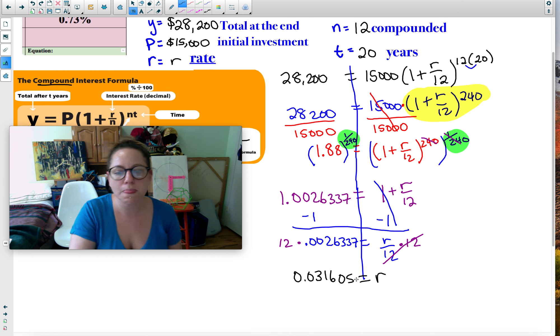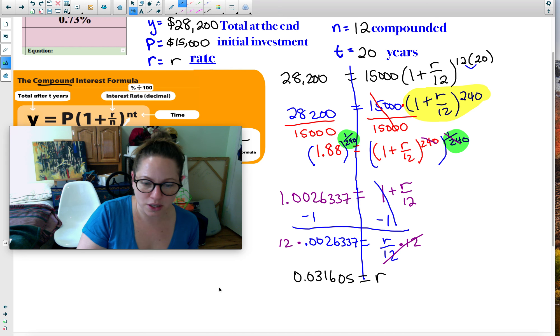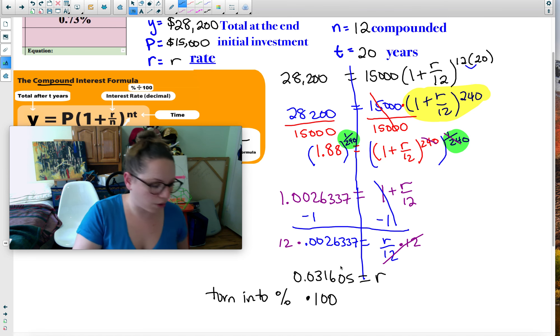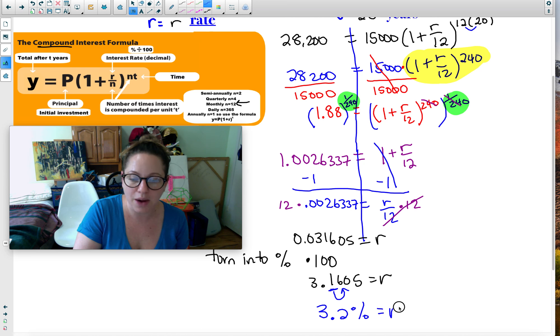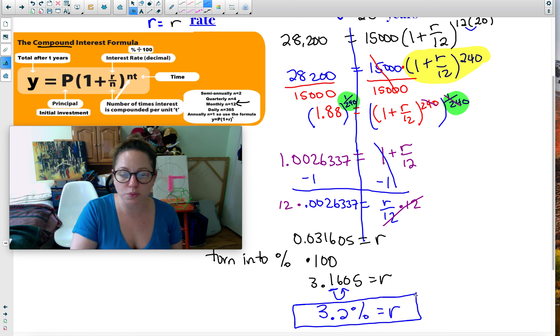But I need it as a percent. To turn it into a percent, you multiply times 100. So I'm going to multiply this times 100, and I get 3.1605 equals the rate. When I round it to the nearest tenths place, that's the first number after the decimal, the six tells the one to go up. So mine becomes 3.2%. That would be my rate. I would need a CD account that grows at 3.2%.